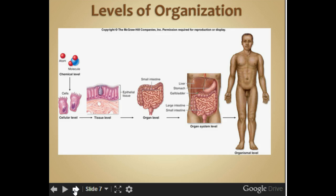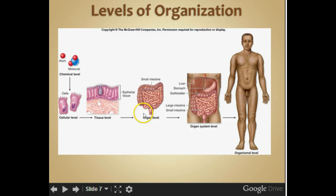Levels of organization. Atoms make up molecules when they bond together. Molecules bond together to make up cells. Cells bond together to make up tissues. Tissues come together to make up an organ. Different organs put together make up a system — an organ system. When we put all the organ systems together, we get an organism.